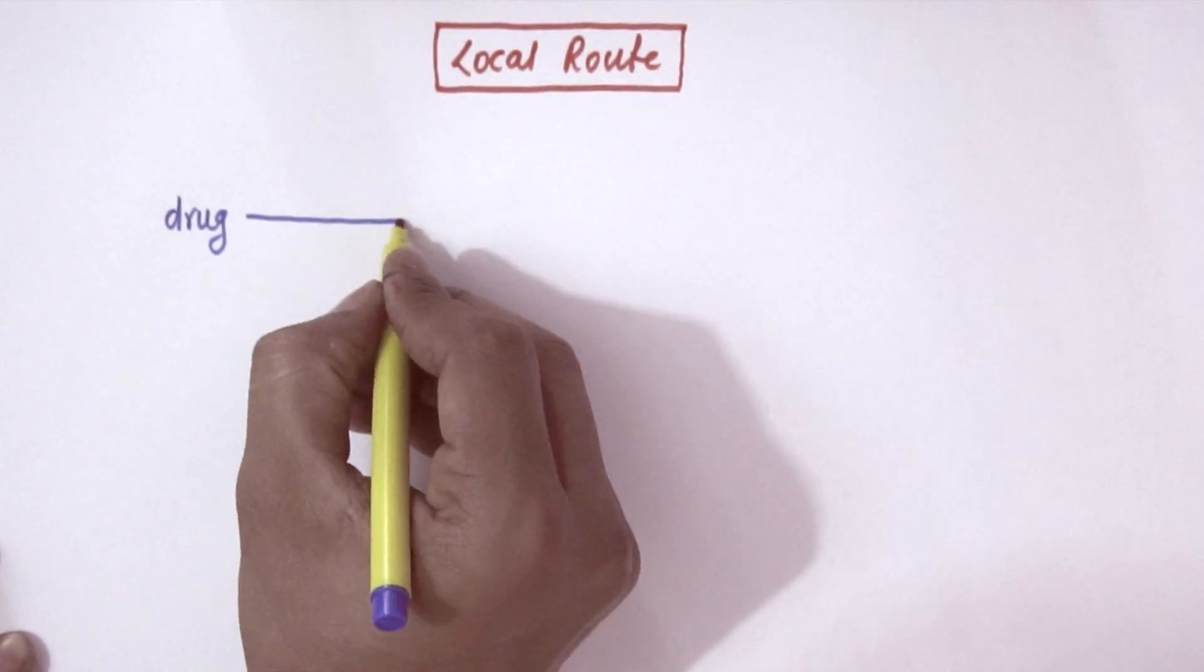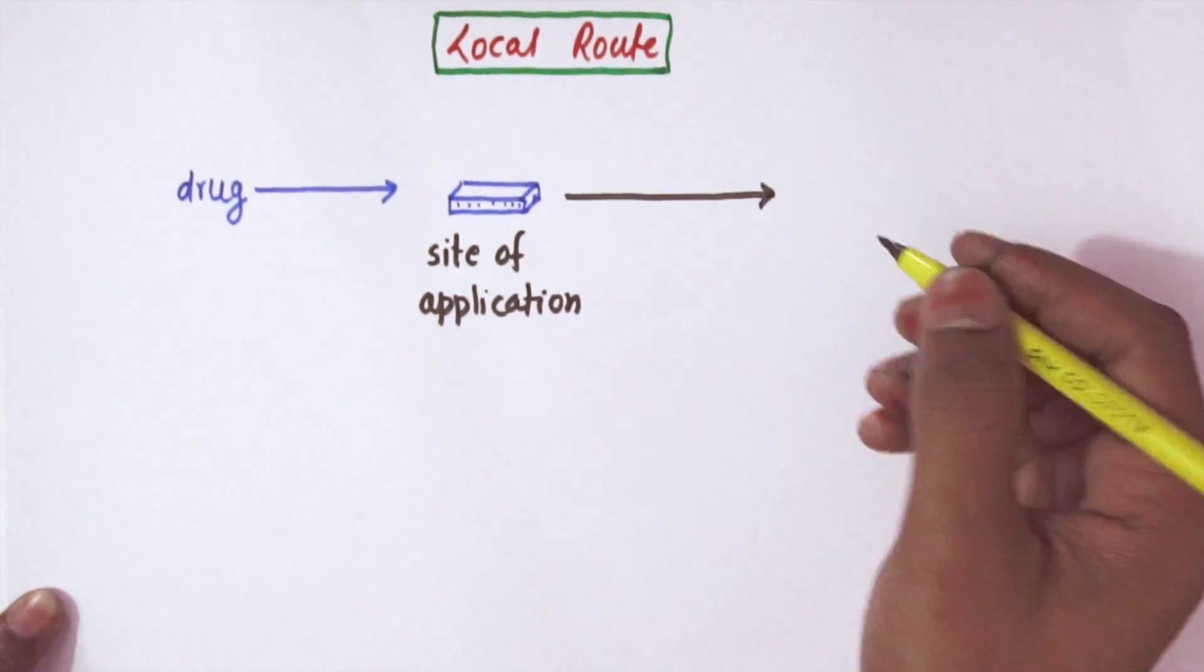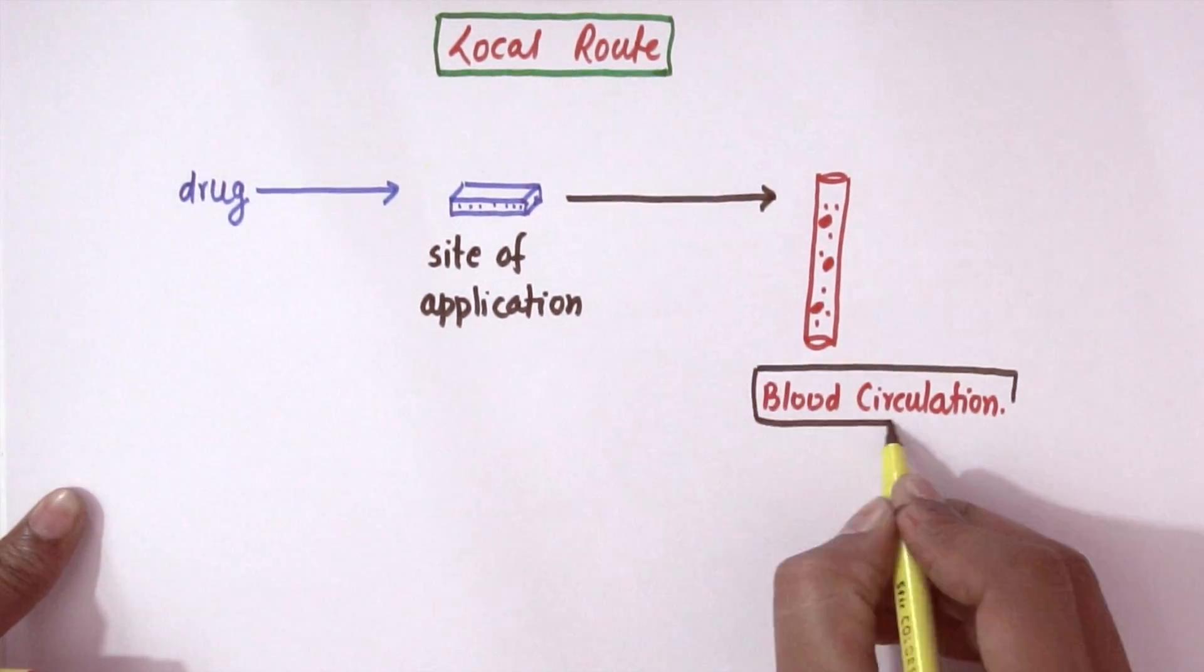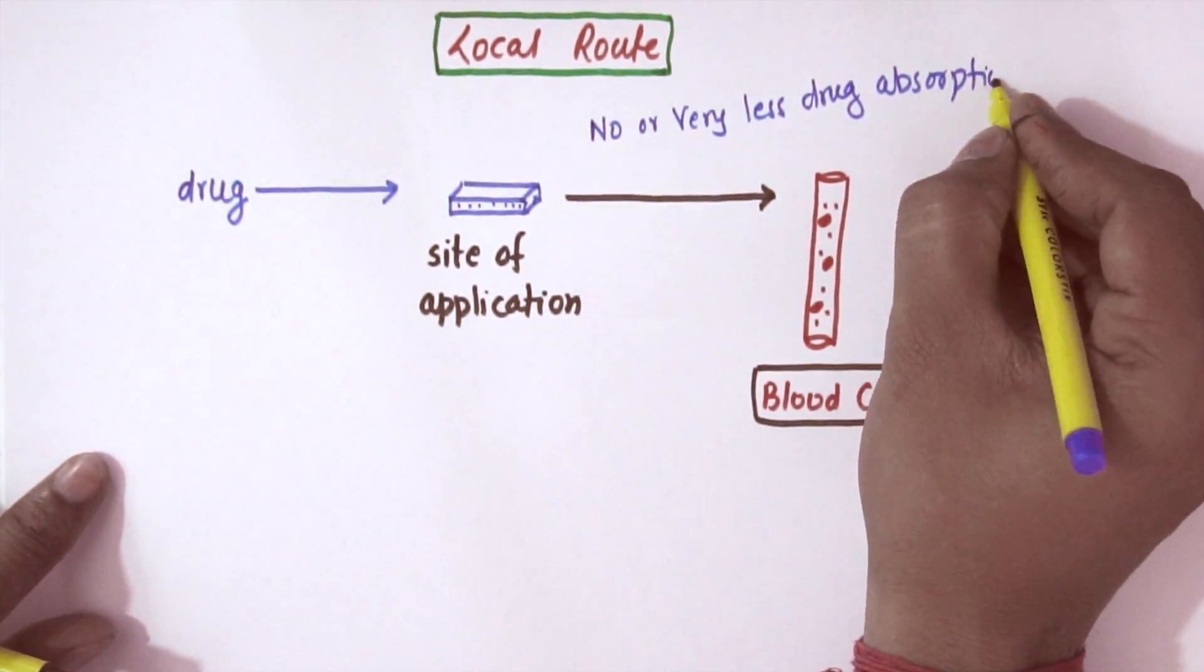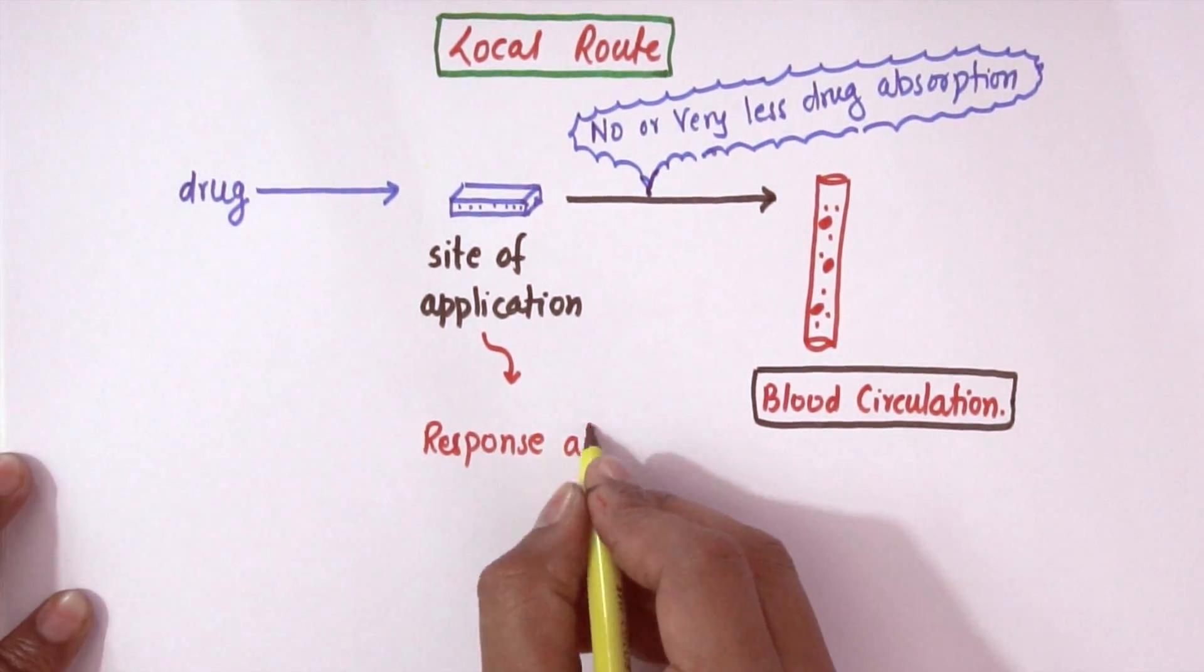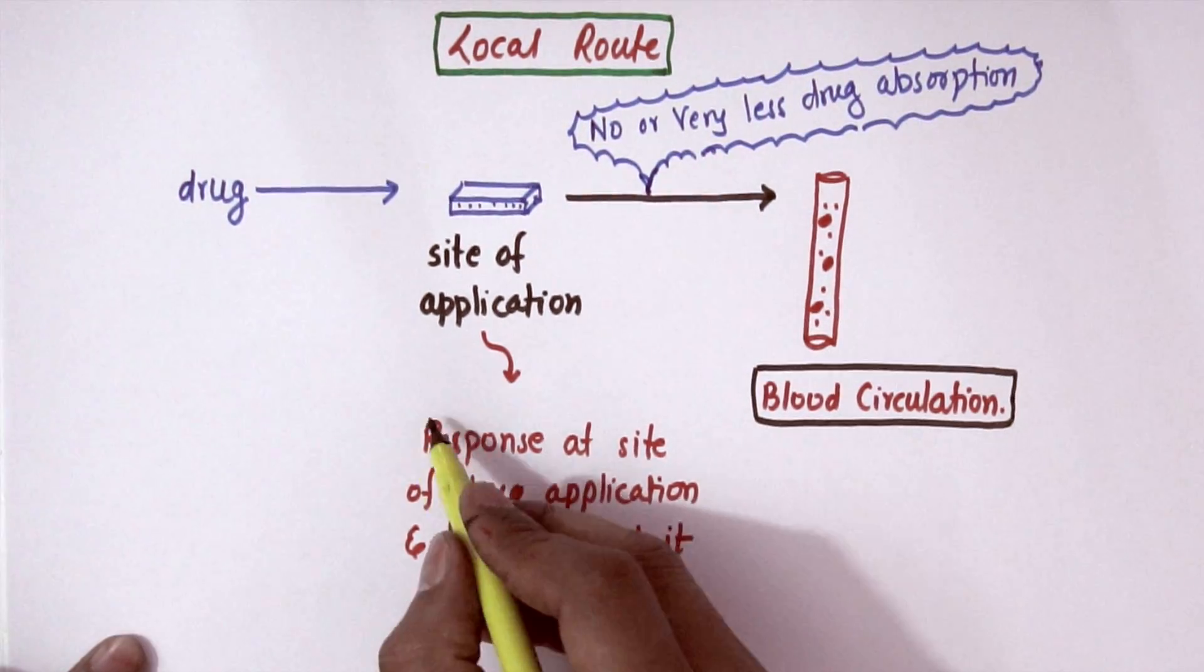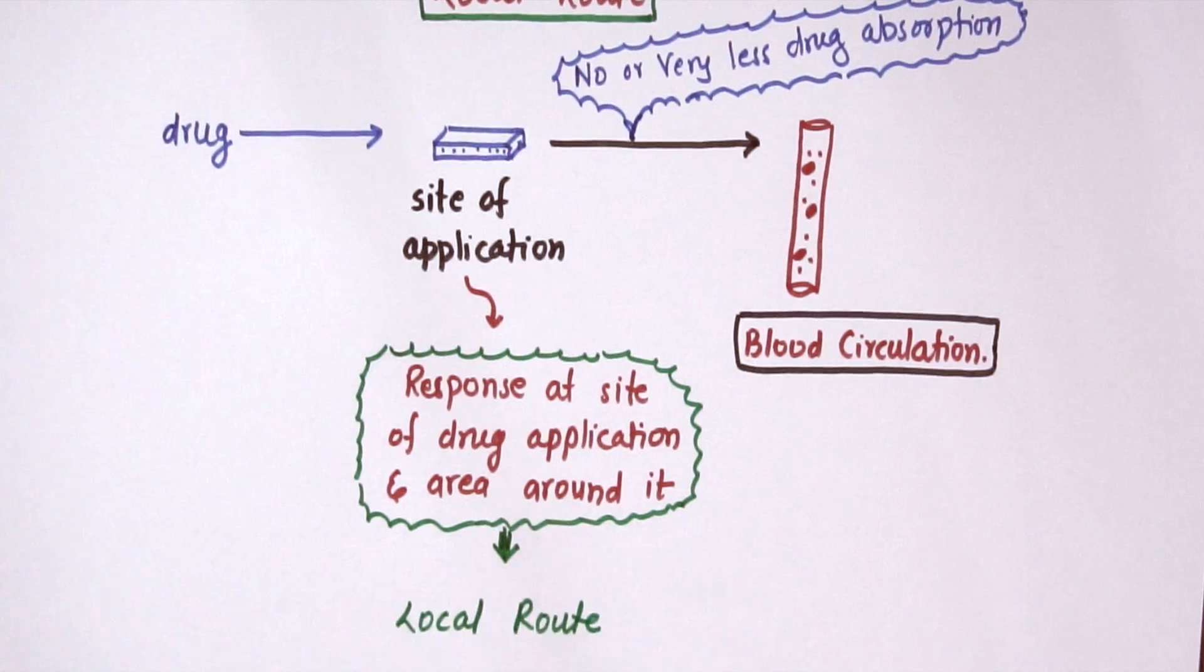Now we'll discuss local route. When a drug is applied on an organ or some part of the body, that is called the site of application. Naturally, the drug will move towards blood circulation - the process is called drug absorption. But if we can apply a drug in such a way that there will be no or very less drug absorption, then the response will be seen at the site of application or area around it, because the drug will be accumulated there.